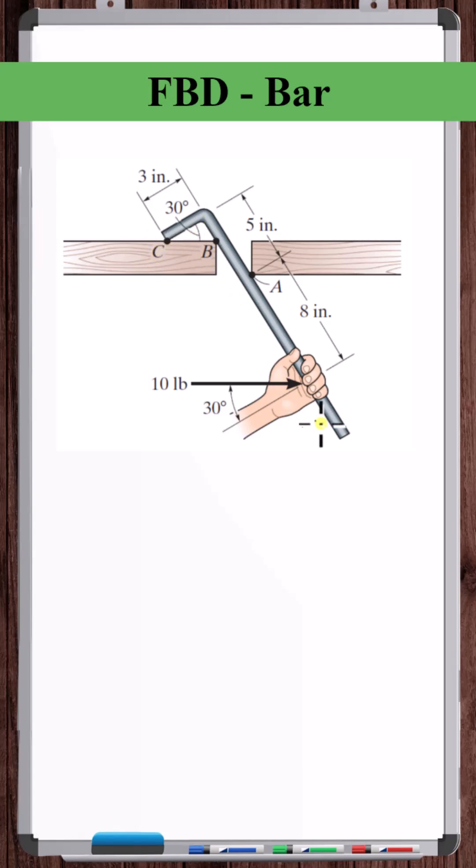Let's draw the free body diagram of this bar. So there's a 10-pound force acting here at an angle of 30 degrees from the axis of the handle.